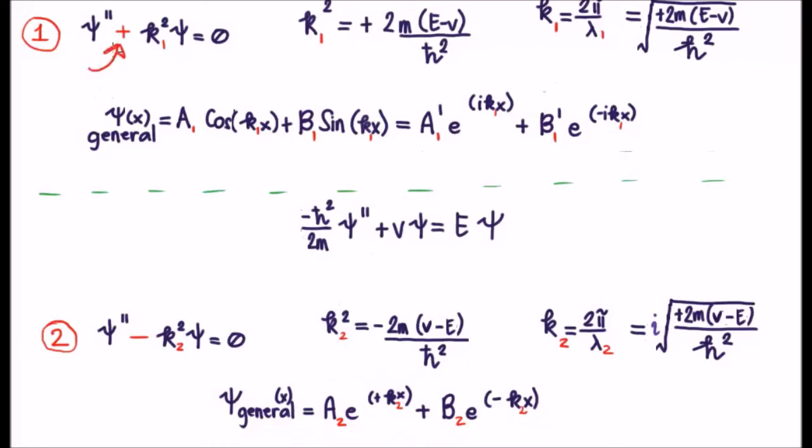So, if we have plus k₁² times ψ, we're going to get a linear combination of complex exponentials. But if we have minus k₂² times ψ, we're going to get a linear combination of real exponentials.